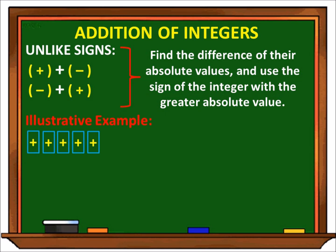For illustrative example, halimbawa meron tayong limang positive na tiles plus tatlong negative na tiles. Ang given natin ay positive 5 and negative 3. Ang gagawin lang natin dito ay kukunin natin yung sign ng mas malaking integer — yung positive. Kaya, positive 5 plus negative 3, answer is positive 2. Kinopya natin yung sign ng 5 dahil siya yung mas malaking absolute value, then sinubtract lang natin yung dalawang number. 5 minus 3 is 2, kaya ang final answer is positive 2.